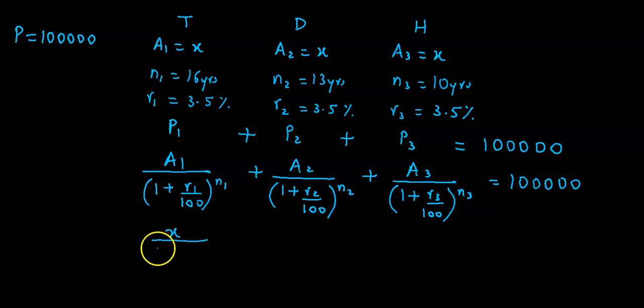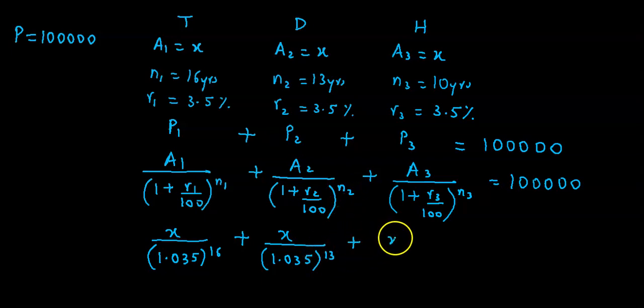Now substituting, this will be x upon (1 plus 3.5 upon 100), which is 1 point - now 3.5 divided by 100 is 0.035 raised to n1, n1 is 16. Then again this is x upon 1.035 raised to 13. And x upon 1.035 raised to 10, is equal to 1 lakh.